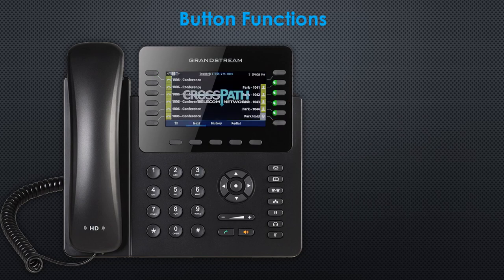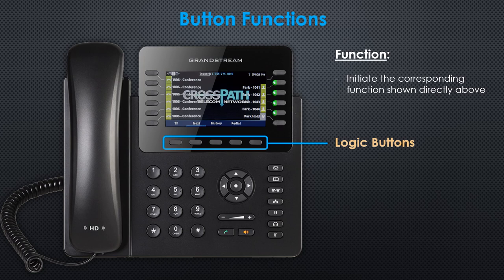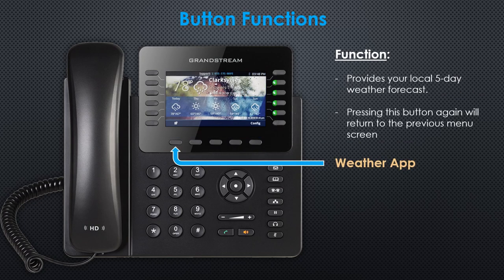Button Functions. The remaining buttons on your CrossPath telephone also have specific functions. The five buttons located beneath the display are logic buttons. Logic buttons initiate the corresponding function shown on the screen directly above. The first logic button displays the Weather app, which provides your local five-day weather forecast. Pressing this button again will return you to the previous menu screen.